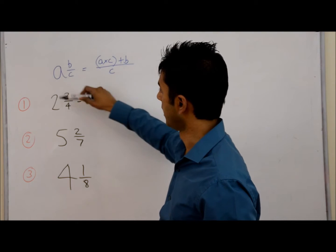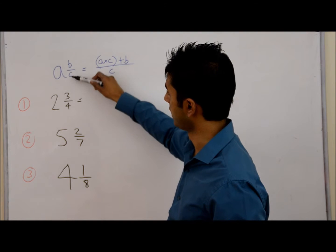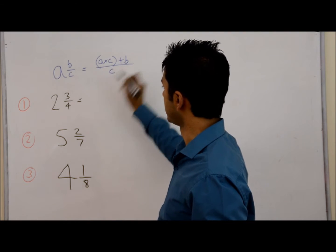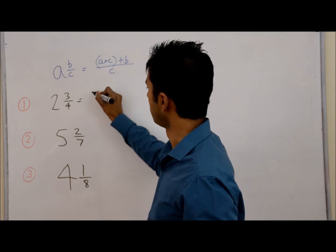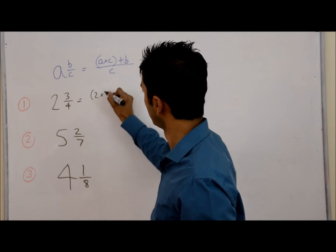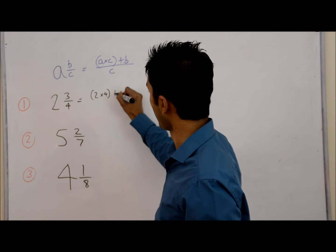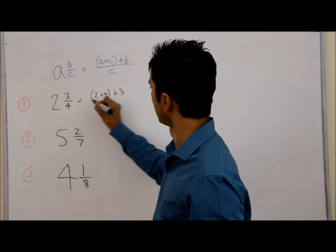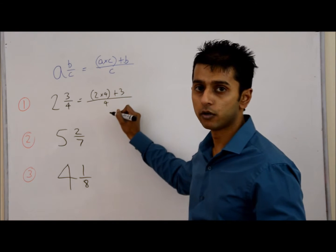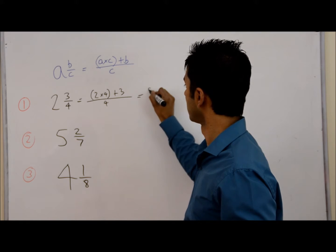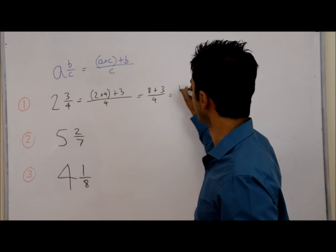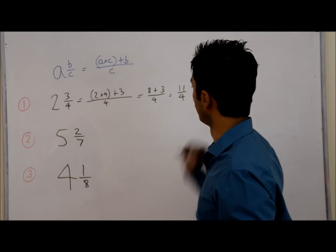In this example, A is 2, B is 3, and C is 4. So we do A times C add B — that's (2 times 4) add 3, over the denominator 4. Now 2 times 4 is 8, so 8 add 3 over 4, which becomes 11 over 4.